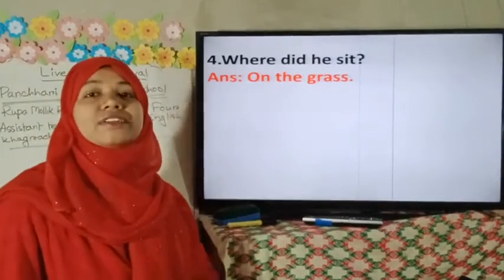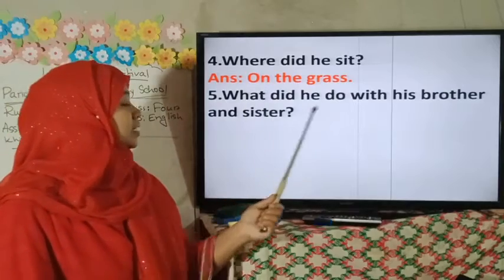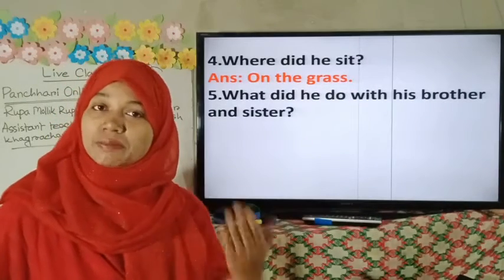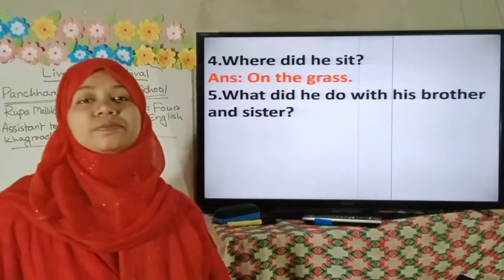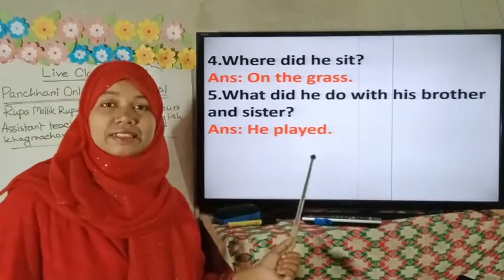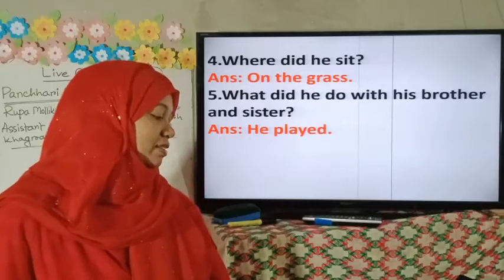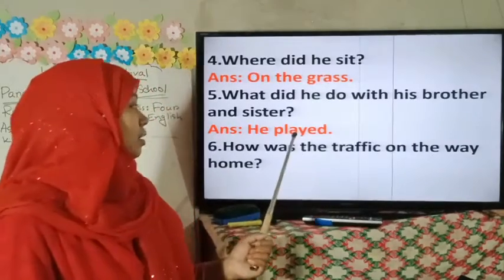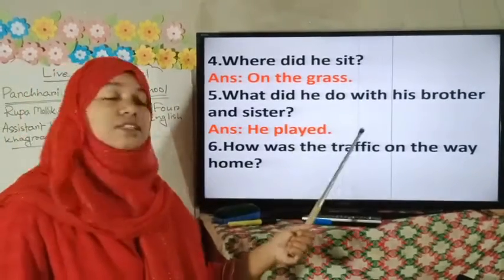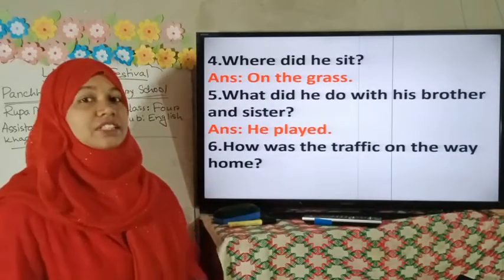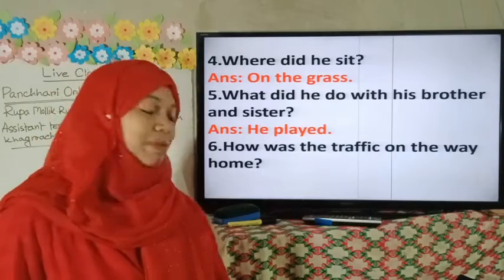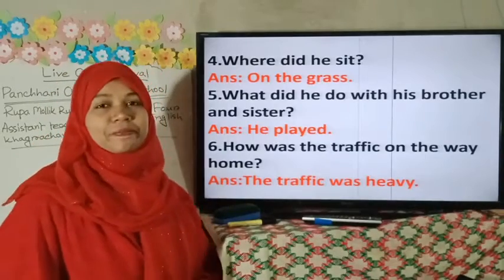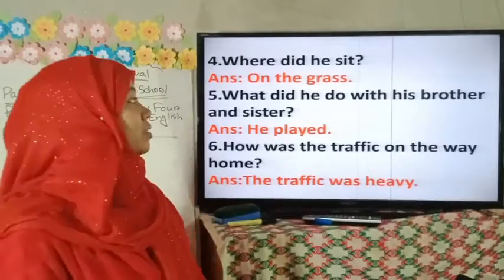Number five: What did he do with his brother and sister? He played with his brother and sister. Then, number six: How was the traffic on the way home? When they were going back home, how was the traffic? The traffic was heavy. I hope you all can match your answer and your answer is correct.